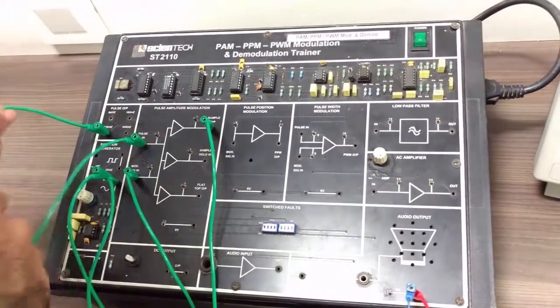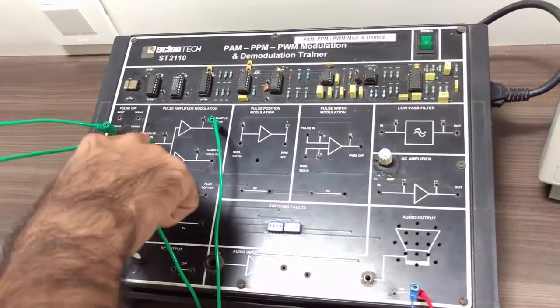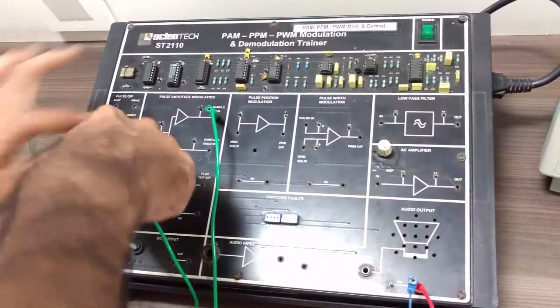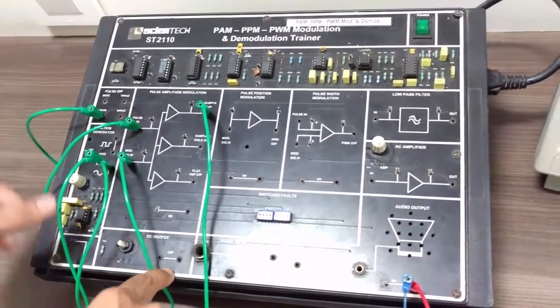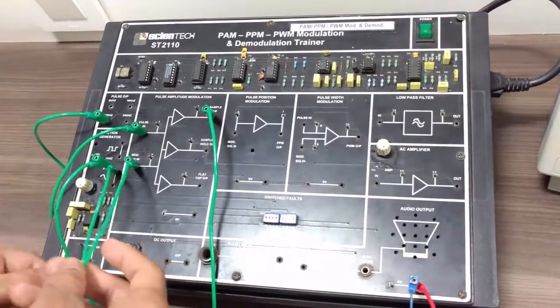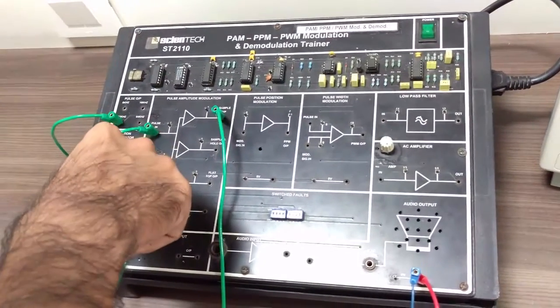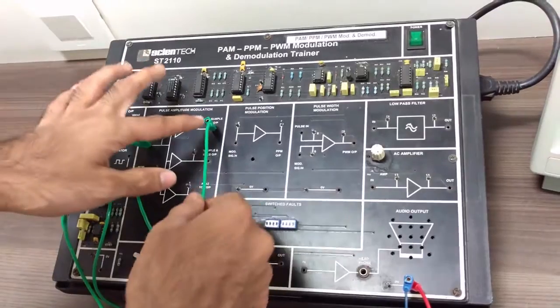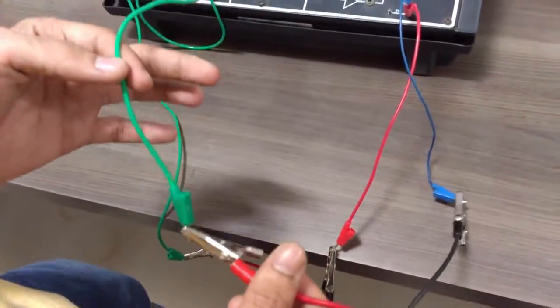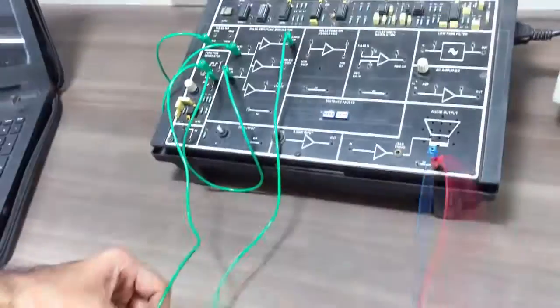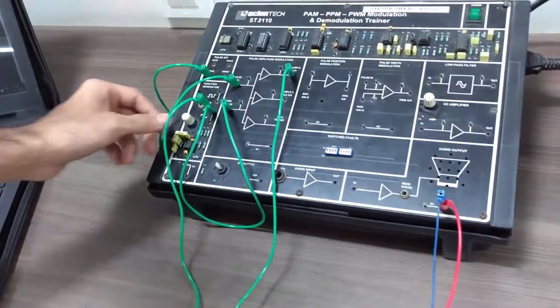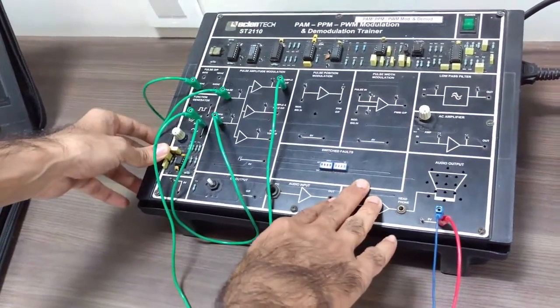In this we have given 32 kHz pulse wave as an input to the Pulse In knob over here. And we are giving a sine wave of 1 kHz frequency as the modulating signal. We are checking the output as the sample output on channel 2, and on channel 1 we are checking the pulse input. So now let us see the output on the DSO.